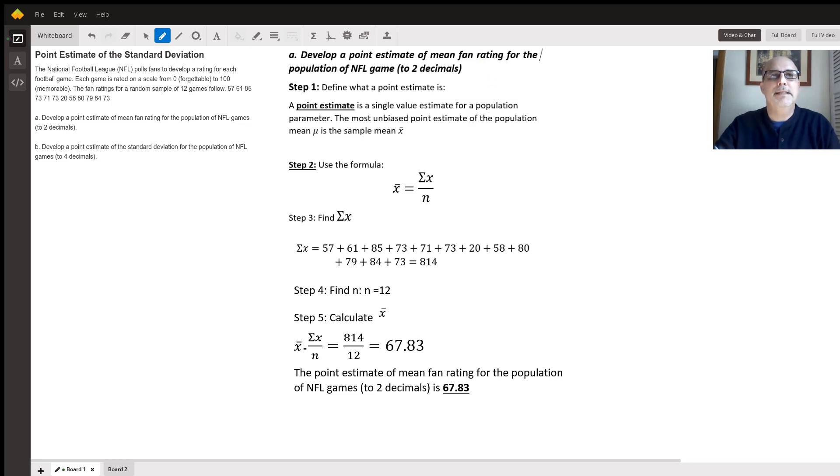Today we're going to look at a statistics question. The problem states that we're trying to develop a point estimate of the mean fan rating for the population of NFL games to two decimal places, and Part B is to develop a point estimate of the standard deviation for the population of NFL games to four decimal places.